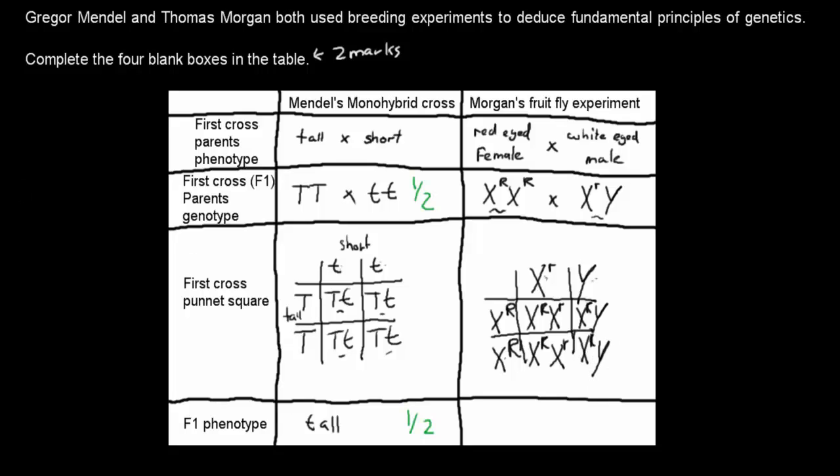So here we have two females, this one and this one, and we have two males, this one and this one. And because they all have at least one dominant R, they have one red dominant R, that means they're all going to have red eyes. So their phenotype, their appearance, is they're all going to have red eyes.